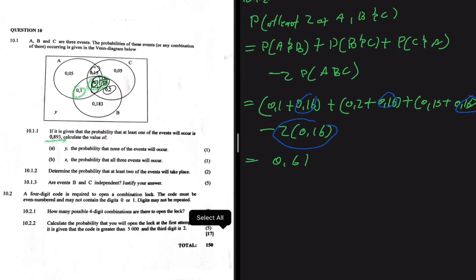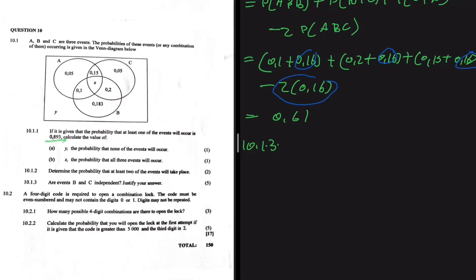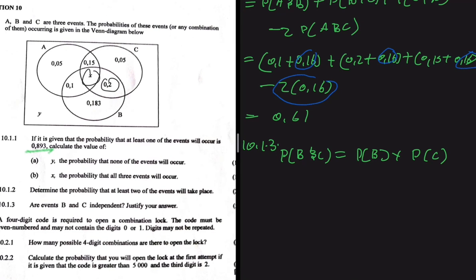For question 10.1.3, we determine whether events B and C are independent. By definition, two events B and C are independent if P(B∩C) equals P(B) multiplied by P(C). From the Venn diagram, P(B∩C) includes the region with 0.2 and X, so P(B∩C) equals 0.16 plus 0.2, giving 0.36.